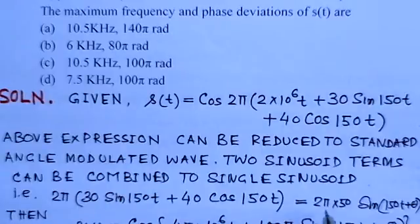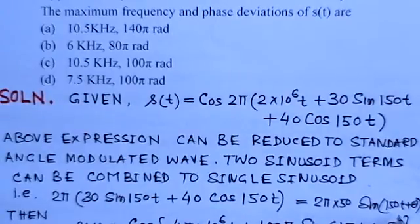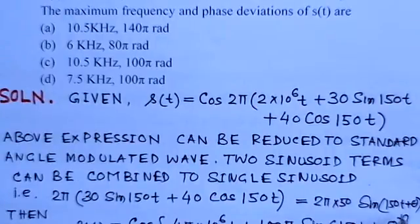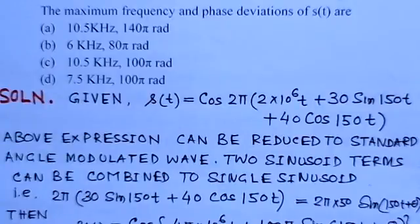So this will come 2π × 50 with that magnitude part. So it will be 2π × 50 × 150t + θ.